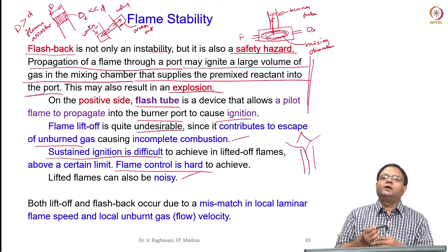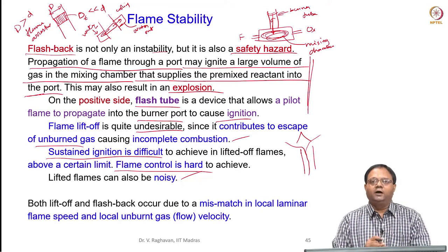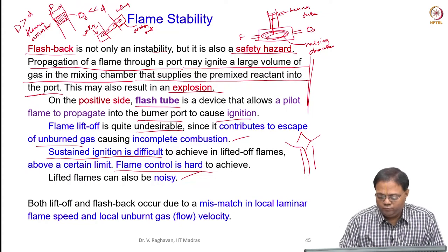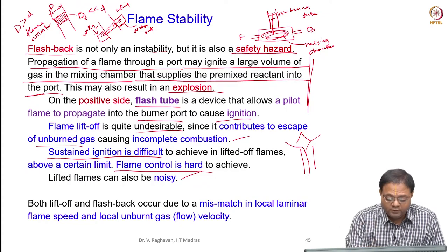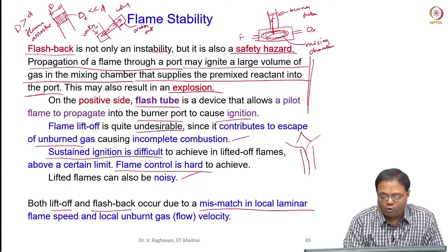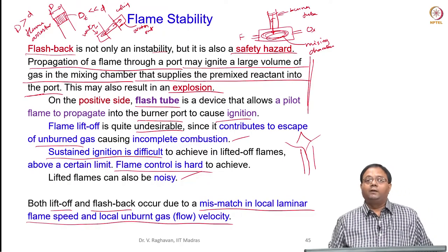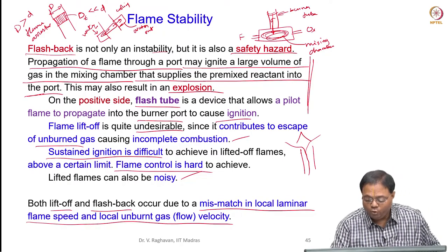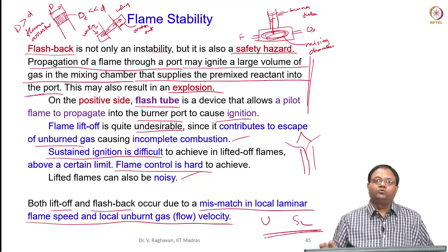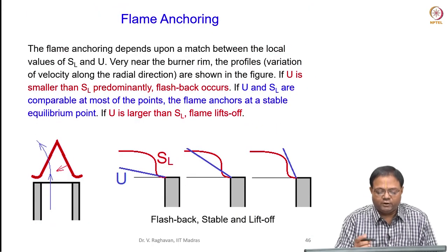These are the instability problems we need to avoid. When you design a burner, it has to be tested for the range of flow rates in which it can be operated in a stable manner. Both lift-off and flashback are due to mismatch of local laminar flame speed SL with the unburned velocity U.